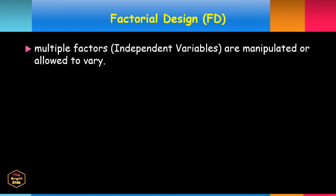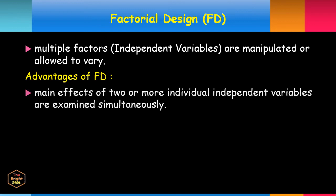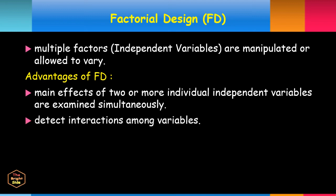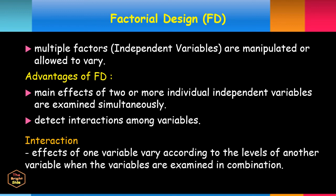In Factorial Design experiments, multiple factors — the researcher-controlled independent variables — are manipulated or allowed to vary. They provide two main advantages: first, they allow researchers to examine the main effects of two or more individual independent variables simultaneously; second, they allow researchers to detect interactions among variables. An interaction is when the effects of one variable vary according to the levels of another variable, detectable only when variables are examined in combination.